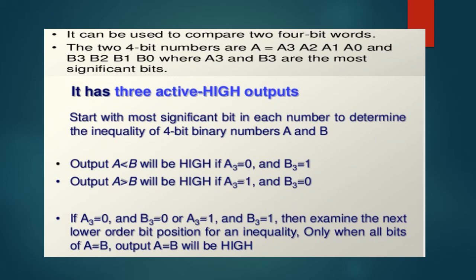If A3 is equal to 0 and B3 is equal to 0 or A3 is equal to 1 and B3 is equal to 1, then examine the next lower order bit position for an inequality. Only when all bits of A is equal to B, output A is equal to B will be high.